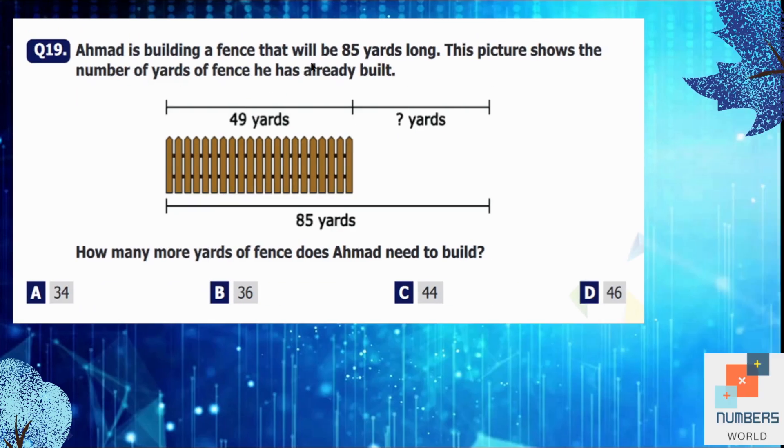Question number 19: Ahmed is building a fence that will be 85 yards long. This picture shows the number of yards of fence he has already built. How many more yards of fence does Ahmed need to build? So out of total 85 he has already built 49 yards. To find out how much more he needs to build we are going to subtract 49 out of the total which is 85. So let's do it. 9 cannot be taken out of 5 because it is greater than 5. So we are going to borrow 1 from 8. So 7 is remaining here and 5 will become 15. 15 minus 9 is equal to 6 and 7 minus 4 is equal to 3. It means he needs to build 36 yards more. So B is our correct option.